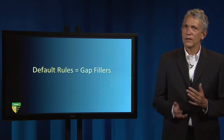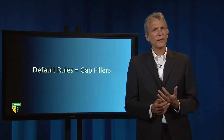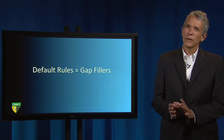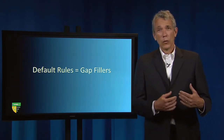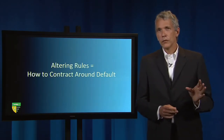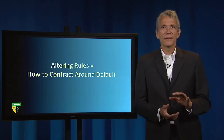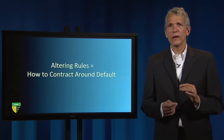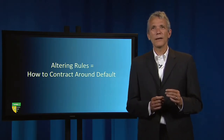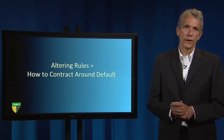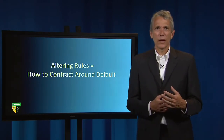Many times statutes and decisions will not expressly address whether a particular rule can be altered by private agreement. When a rule is merely a default, it is important to understand the necessary and sufficient requirements for opting out of it — known as altering rules. The UCC Section 2-206(1)(a), for example, establishes the default that an offer invites acceptance 'in any manner and by any medium reasonable in the circumstances,' unless 'otherwise unambiguously indicated' by the offeror. The reasonable medium rule is the default, and the 'unambiguously indicated' requirement provides the altering rule.